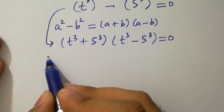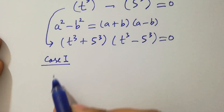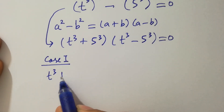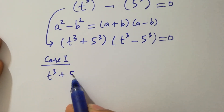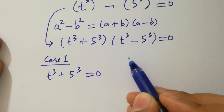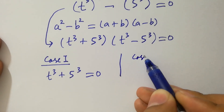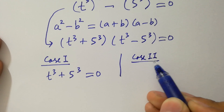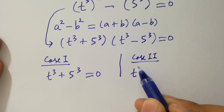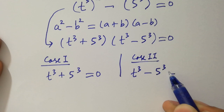We have two cases here. Case 1 is t cubed plus 5 cubed equal to 0, and Case 2 is t cubed minus 5 cubed equal to 0.